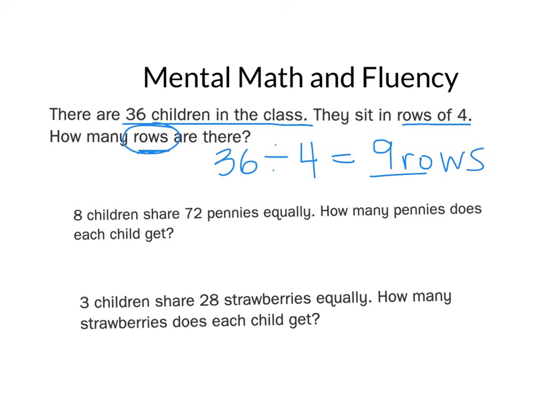For the second one, we have eight children share 72 pennies equally. So we know that we have a total of 72 pennies, and we need to share those between eight children equally. How many pennies does each child get? And the answer would be nine, because nine times eight is 72. So nine pennies.